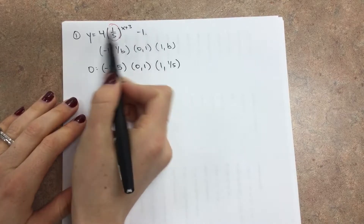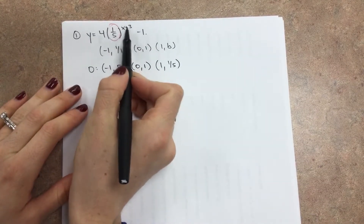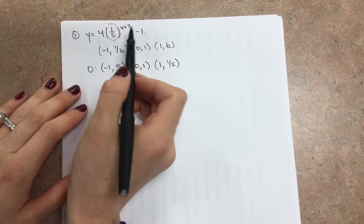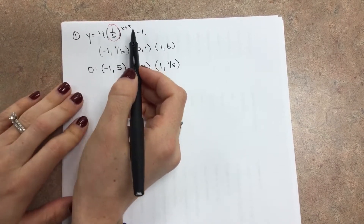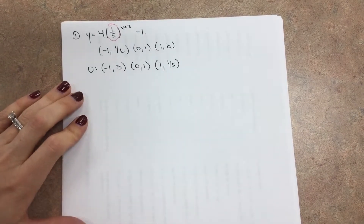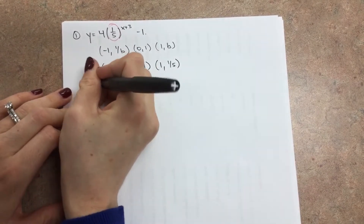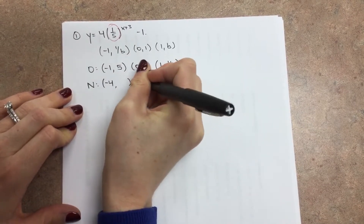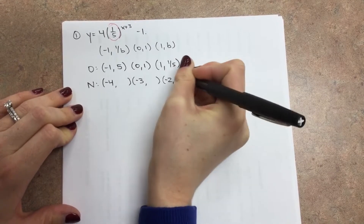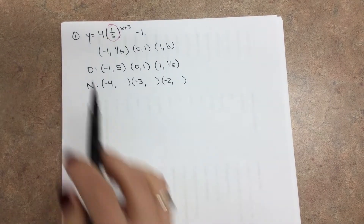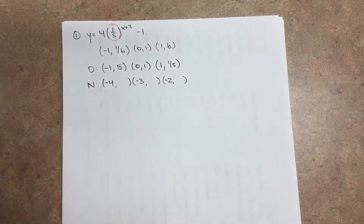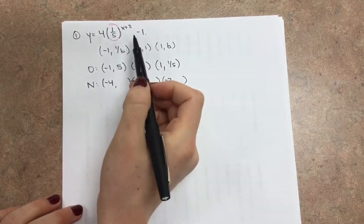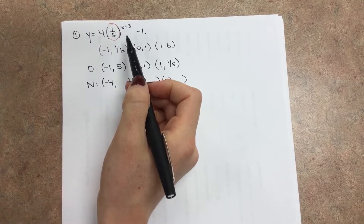There are three other things that are going to change our points. Look up in the exponent. Whatever is in the exponent is going to change x, and it's going to change it the opposite way of what it looks like. So if you see x plus 3, it actually means you subtract 3 from your x values. Anything else is going to change the y — a number out front multiplies your y values, a number in the back adds or subtracts. Y is never the opposite.